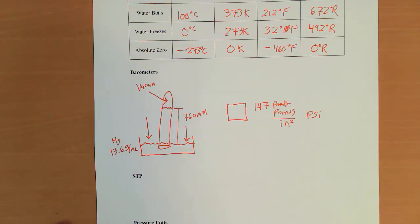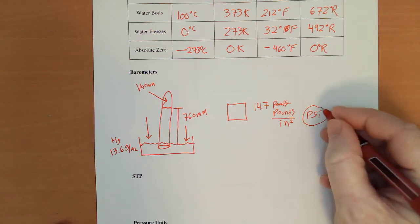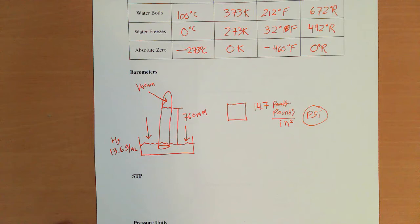Go up on the top of Mount Everest, and it's going to be a lot less. The PSI unit is important for you to understand, not for your chemistry class, but for when you're putting air in the tires of your bicycle or your car. That's typically the unit that they use.